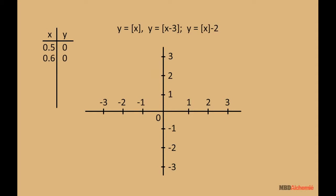Similarly, for 0.6, y is 0. For x equals 0.7, y is 0. Likewise, for x equal to 0.9, y is 0, and for x equal to 0, y is 0. Then the graph is from 0 to 1, but 1 is not included.